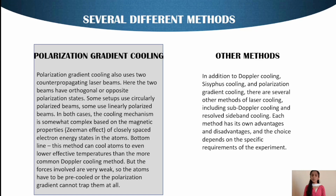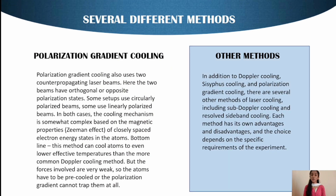The third method is Polarization gradient cooling. Polarization gradient cooling also uses two counter-propagating laser beams. Here, the two beams have orthogonal or opposite polarization states — some setups use circularly polarized beams, some use linearly polarized beams. In both cases the cooling mechanism is somewhat complex, based on magnetic properties like the Zeeman effect of closely spaced electron energy states in the atoms. This method can cool atoms to even lower effective temperatures than Doppler cooling, but the forces involved are very weak, so the atoms have to be pre-cooled, or the polarization gradient cannot trap them at all.